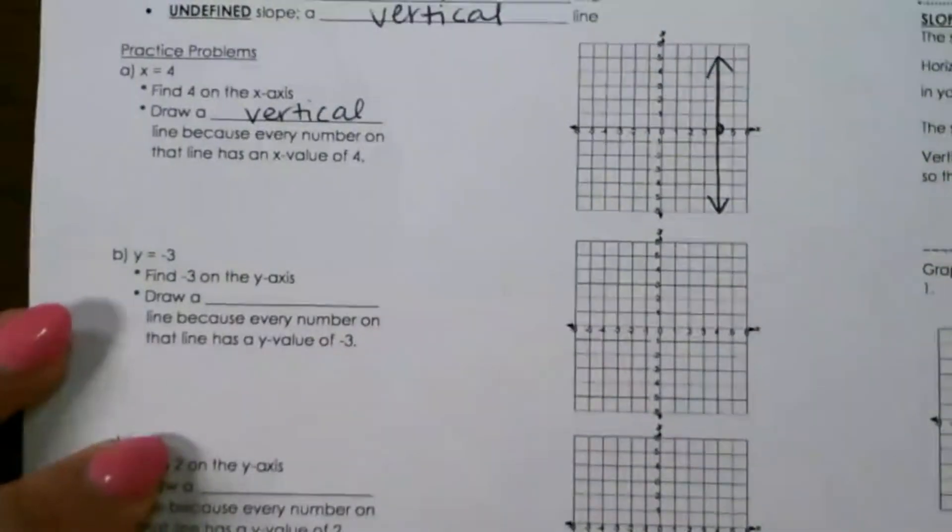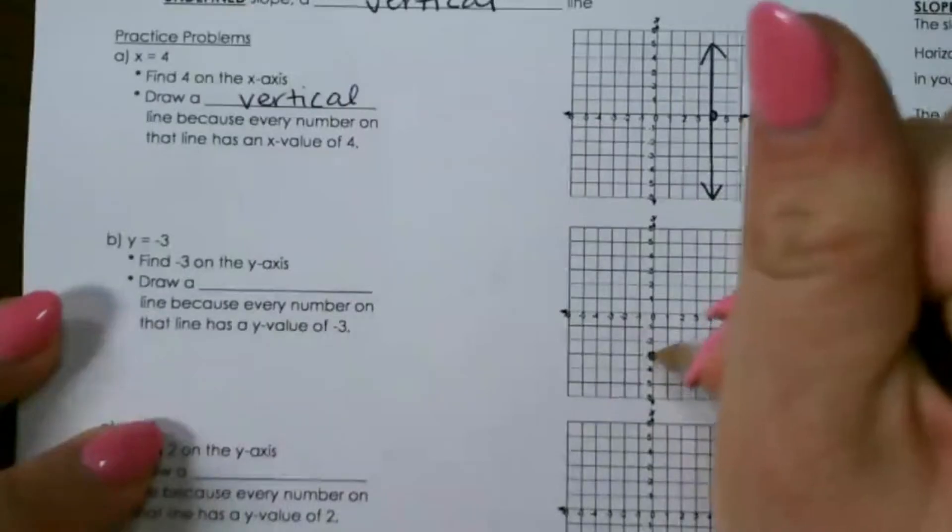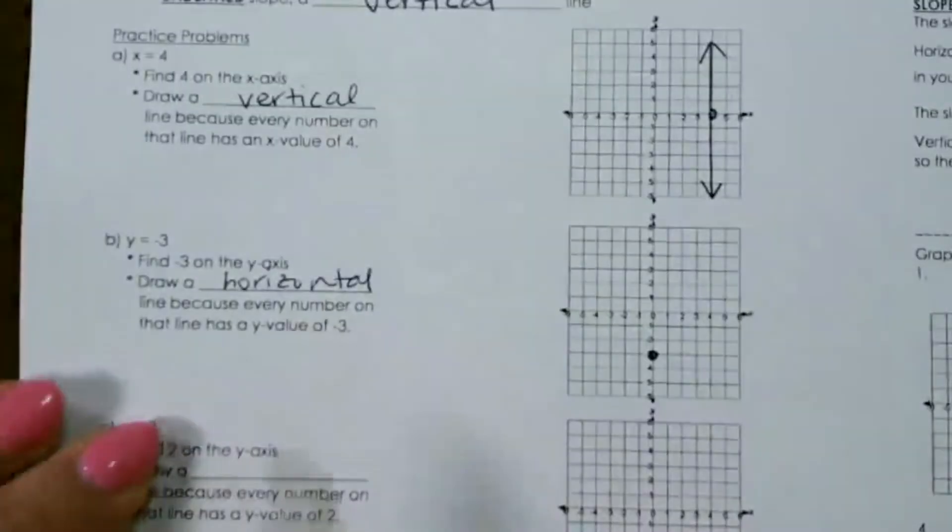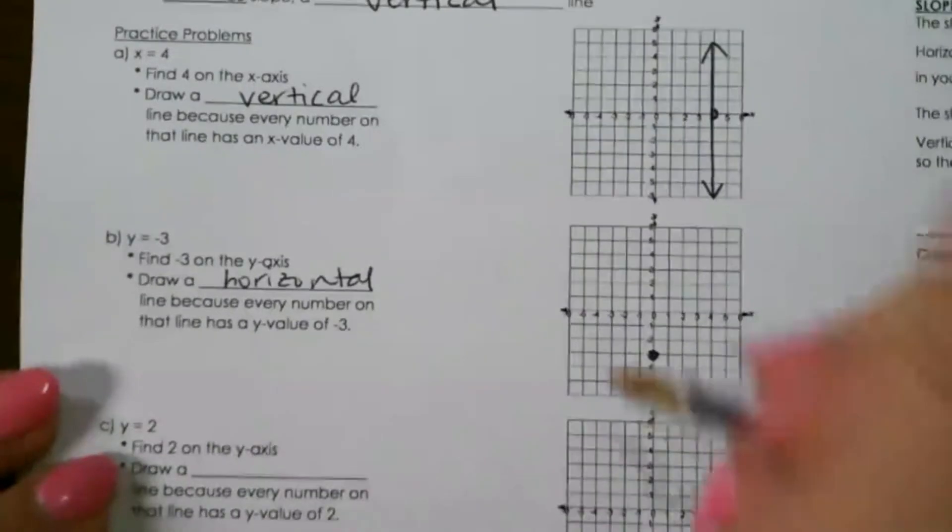Looking at the next one, y equals negative 3. So we find negative 3 on the y-axis, since it's a y, and then we're going to draw a horizontal line. We're going to draw a horizontal line because every number on that line has a y value of negative 3.